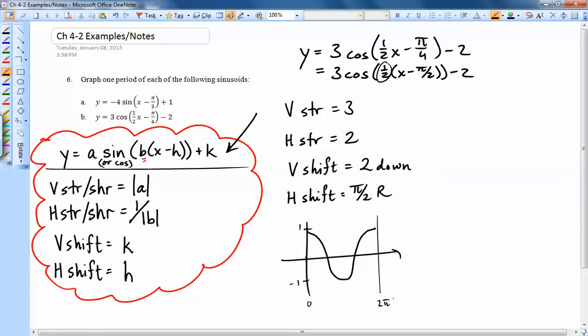So if we just go through the order of these things. Vertical stretch by 3. So that's going to mean instead of 1 to negative 1, we're going to go 3 to negative 3. Horizontal stretch by 2. So instead of 0 to 2π, I'm really going to be going 0 to 4π now.